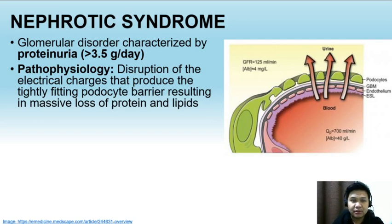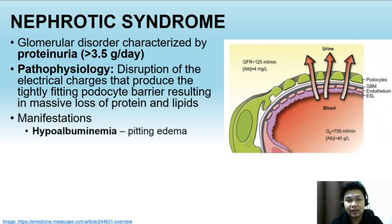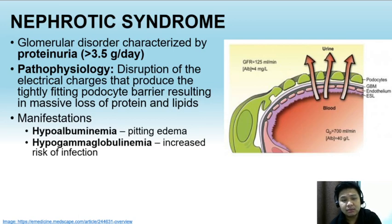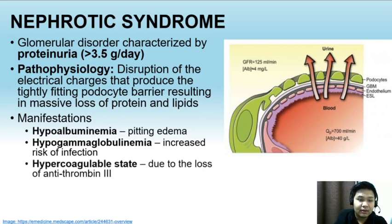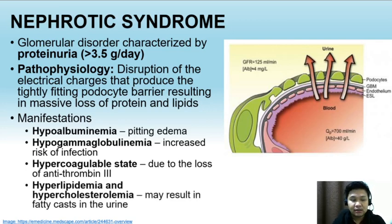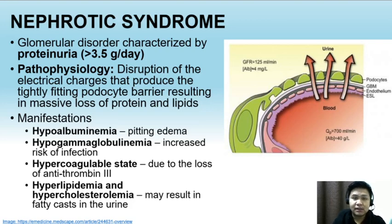Nephrotic syndrome is due to disruption of the podocyte barrier. Manifestations include hypoalbuminemia due to loss of albumin into the urine, presenting with pitting edema. Gamma globulins or immunoglobulins are also lost, causing hypogammaglobulinemia which increases risk for infection. A hypercoagulable state develops due to loss of antithrombin-3, and there is hyperlipidemia and hypercholesterolemia due to increased hepatic lipid production when hypoalbuminemia occurs, which may result in fatty casts in the urine.